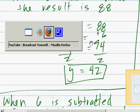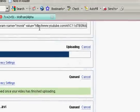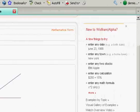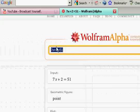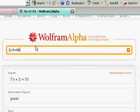And let me just show you the solution on Wolfram Alpha. Let's go up here. 2y minus 6 equals 88. And let's solve for that.